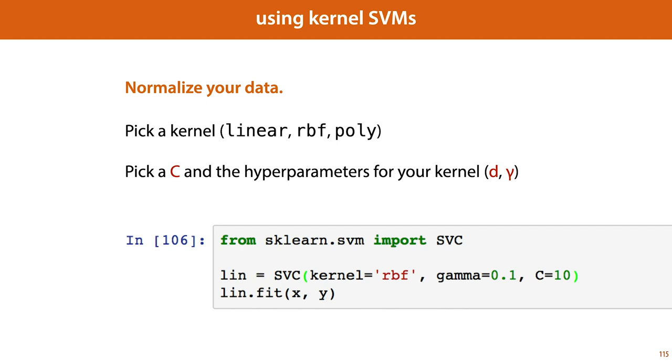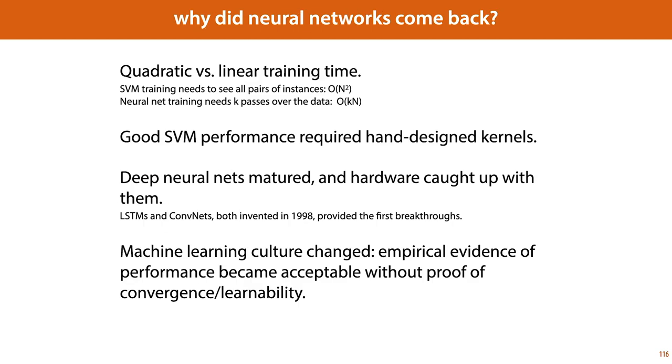So in the 1990s and in the early 2000s, neural networks waned and support vector machines were the dominant method of doing machine learning. Then around 2010, neural networks started to make a comeback. Why was that? One reason is that support vector machines, when you use them like this, need to see all pairs of instances. You need to know for every two instances in your data their dot product or their kernel dot product. This means that your training time is at least n squared. Neural network training using stochastic gradient descent needs only a fixed number of passes over the data, k times n. Now neural networks do require a lot of passes over the data, so it does take a big data set before k times n becomes smaller than n squared. But eventually we did get there, and at that point it became more efficient to train models by gradient descent and the kernel trick lost a lot of its luster.